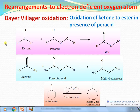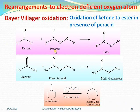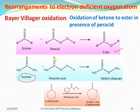When a ketone reacts with a peracid, it forms an ester as a product. For example, when acetone reacts with peracetic acid — where acetic acid has one more oxygen added to form a peracid — the product is methyl ethanoate, which is an ester.